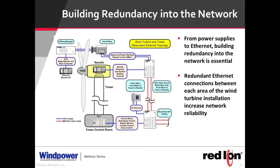In a typical turbine, there's a switch up in the hub, which goes through a slip ring into the nacelle. From the nacelle where all the sensors feed data into the switch, it goes down to the tower, where there's typically another switch. We recommend redundant links in the tower so that if there's a point of failure, there's another path to get the data out. Also, because of the sheer distance — towers now go anywhere from 100 feet to over 400 feet in height — fiber cable is used.